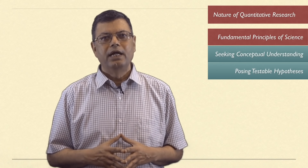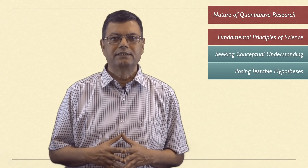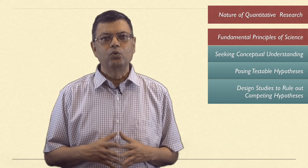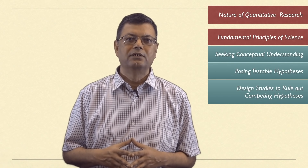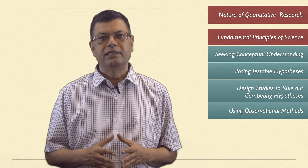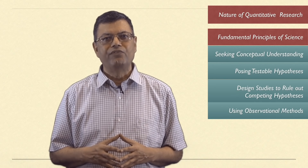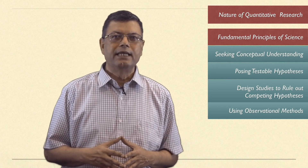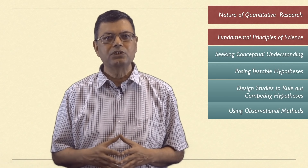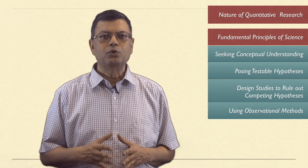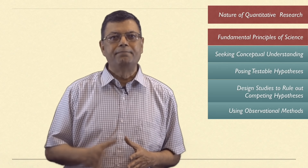The second principle is posing empirically testable and refutable hypotheses. The third principle is designing studies that test and can rule out competing counter-hypotheses. Fourthly, using observational methods linked to theory that enable other scientists to verify their accuracy. And the final principle is recognizing the importance of both independent replication and generalization — that is, a study should be testable, verifiable, and replicable.